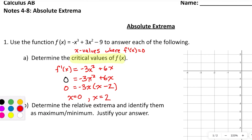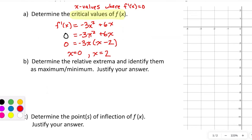Just because these are critical values does not guarantee there will be an extreme value there. However, if there is a relative maximum or relative minimum, it will occur at these critical values. We have to test to find out if they're extrema or not — and along the way decide if they're relative maxima or minima. We'll create a sign chart for f prime.